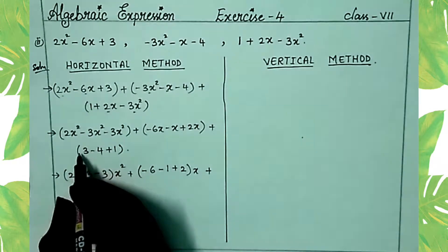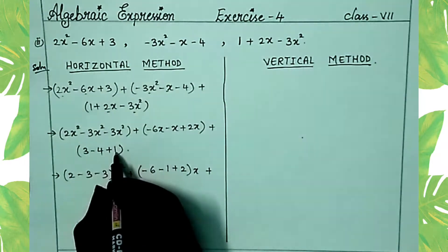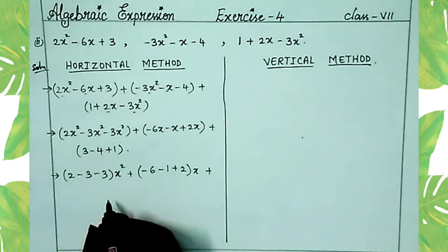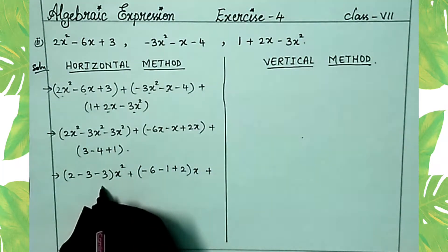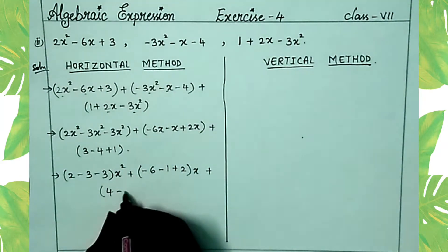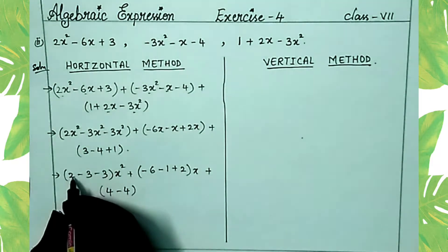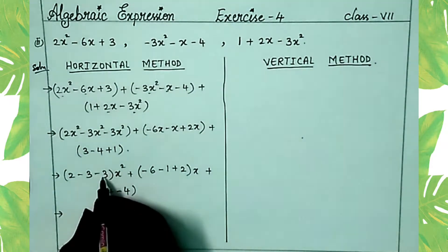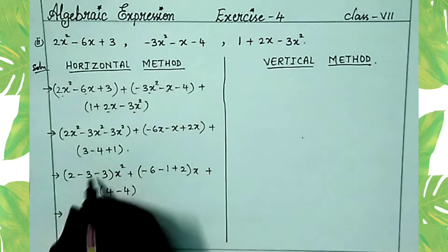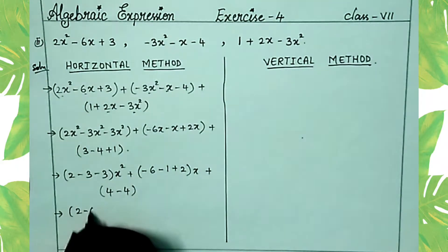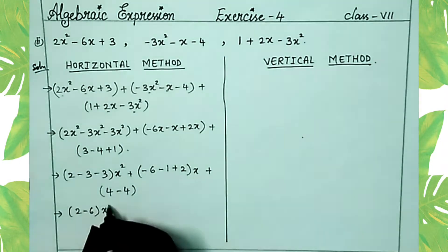Write the positive constant terms: 3 plus 1 equals 4, and 4 minus 4 equals 0. For the x² terms: 2 minus 3 minus 3 equals minus 4, so we get minus 4x².